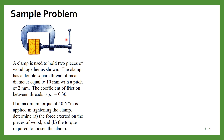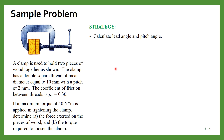Now we will solve this problem related to square-threaded screws. As shown in this figure, a clamp is used to hold two pieces of wood together. The clamp has a double square thread of mean diameter 10 millimeters and a pitch of 2 millimeters. The coefficient of friction between threads is 0.3. If a maximum torque of 40 newton-meters is applied in tightening the clamp, determine the force exerted on the pieces of wood and the torque required to loosen the clamp.